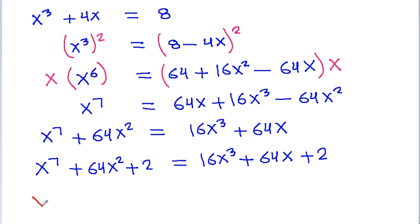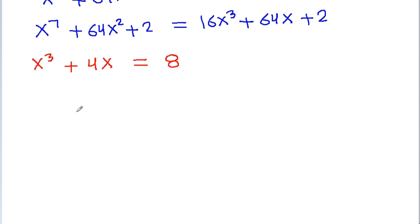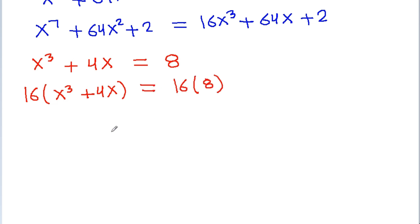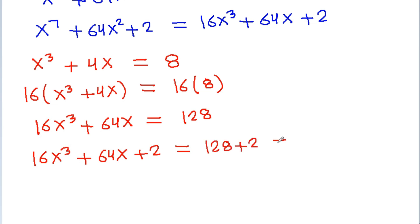And we have given that x cube plus 4x is equal to 8. If we multiply both sides by 16, then 16 times x cube plus 4x will be equal to 16 times 8. So 16x cube plus 64x is equal to 128. Therefore, 16x cube minus 64x plus 2 gives us 130, so this is equal to 130.